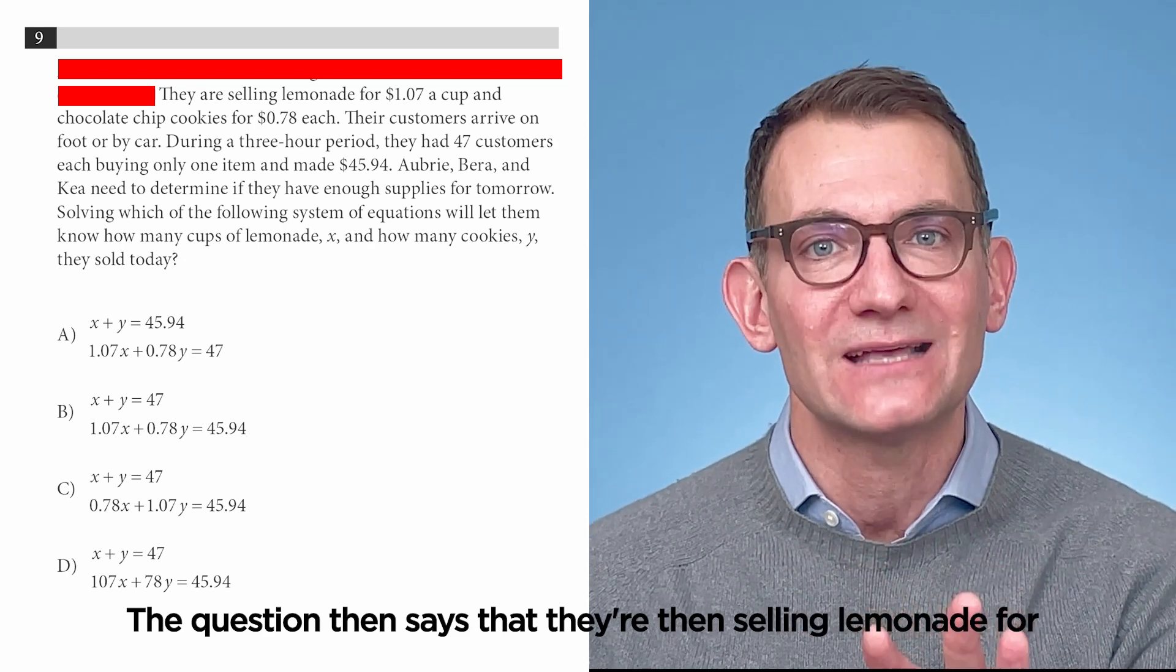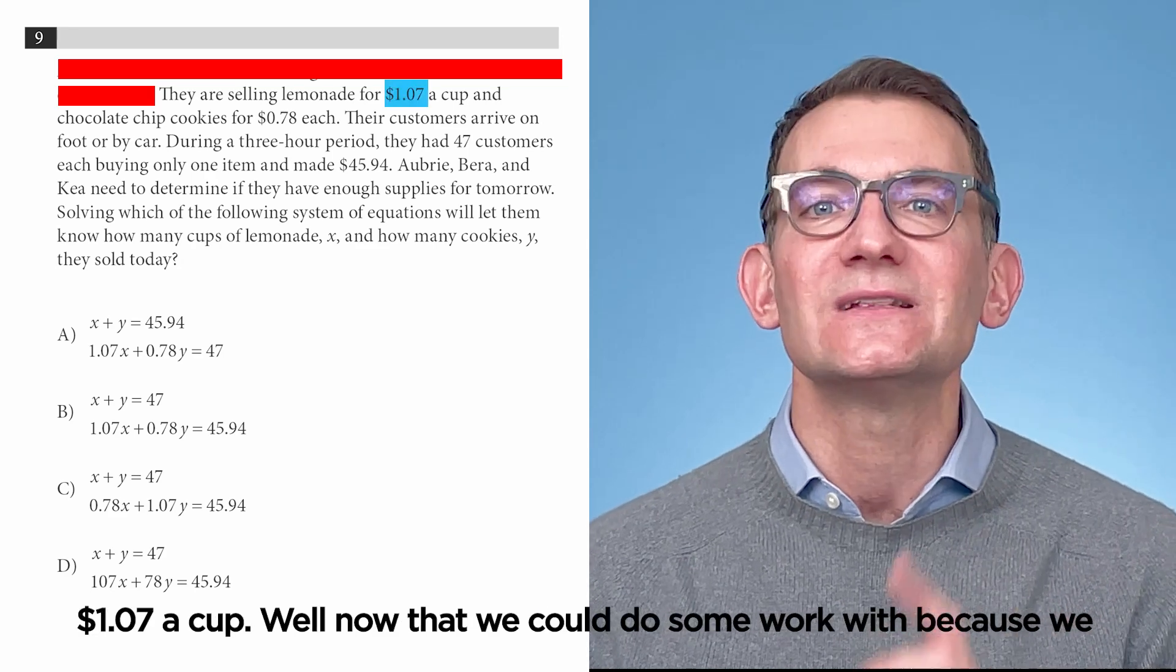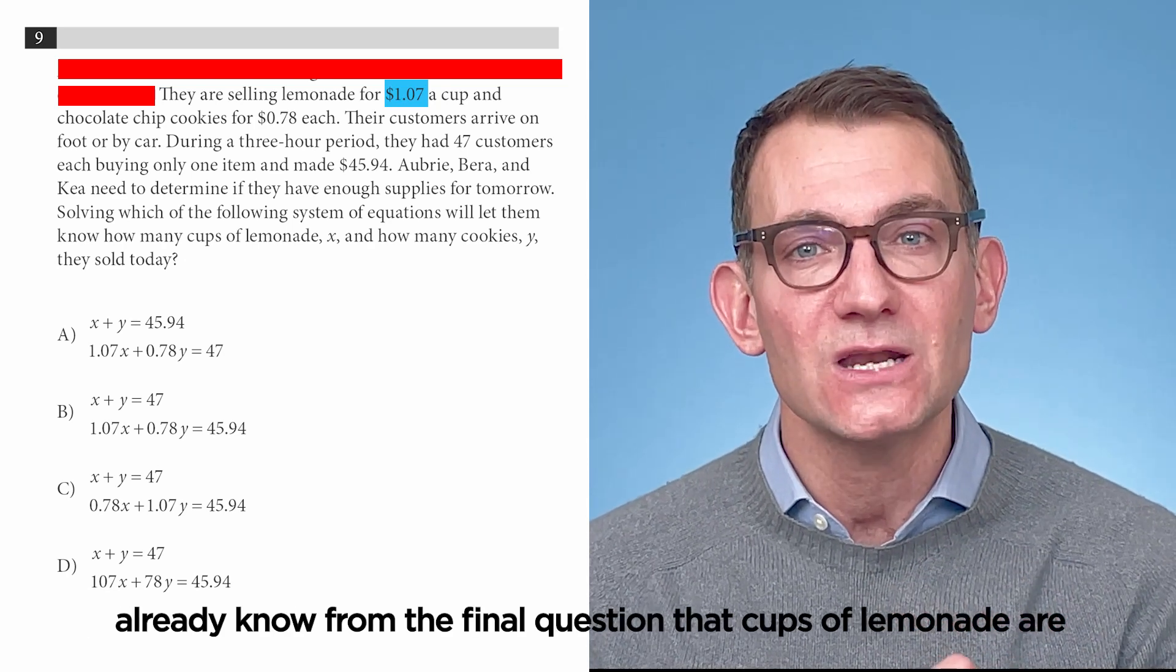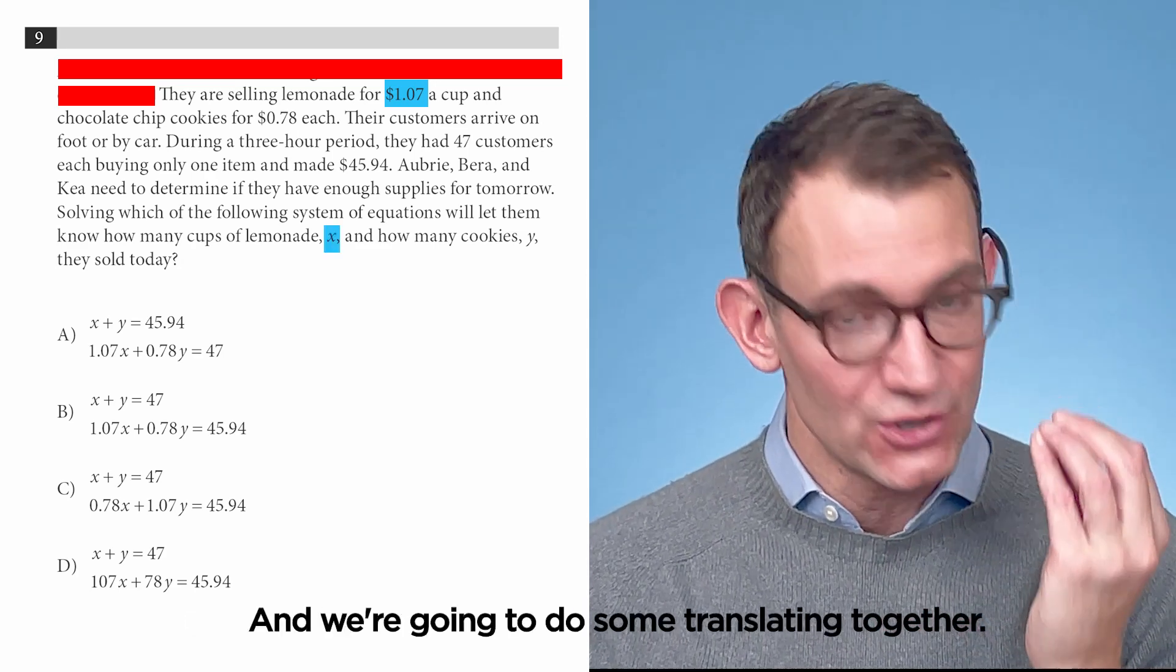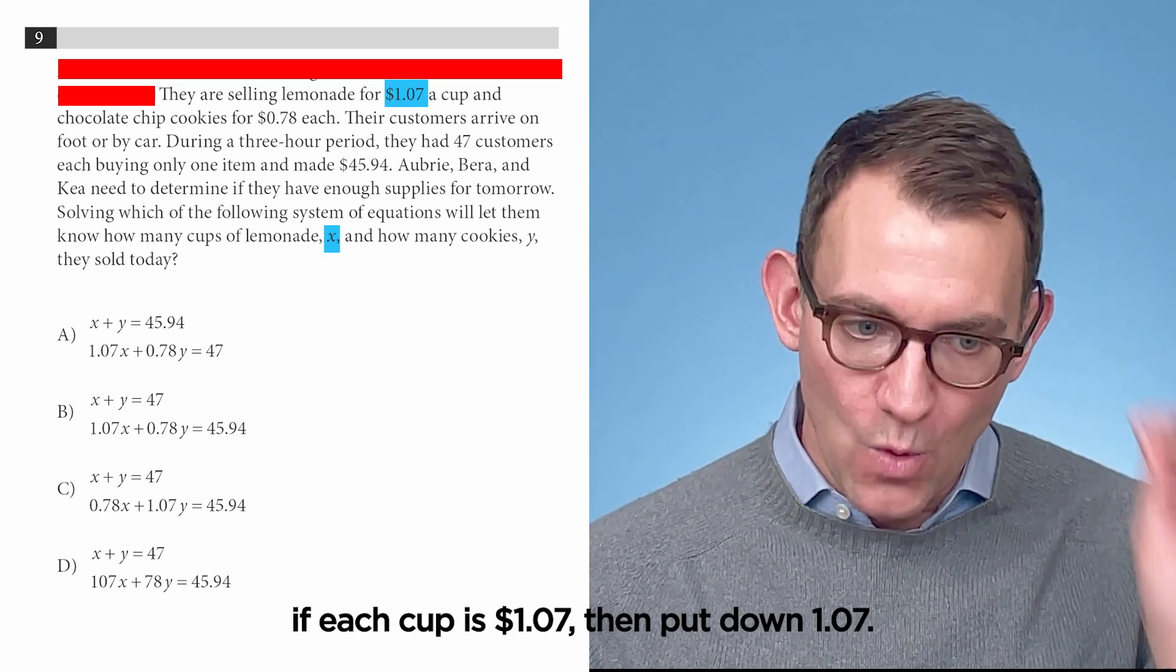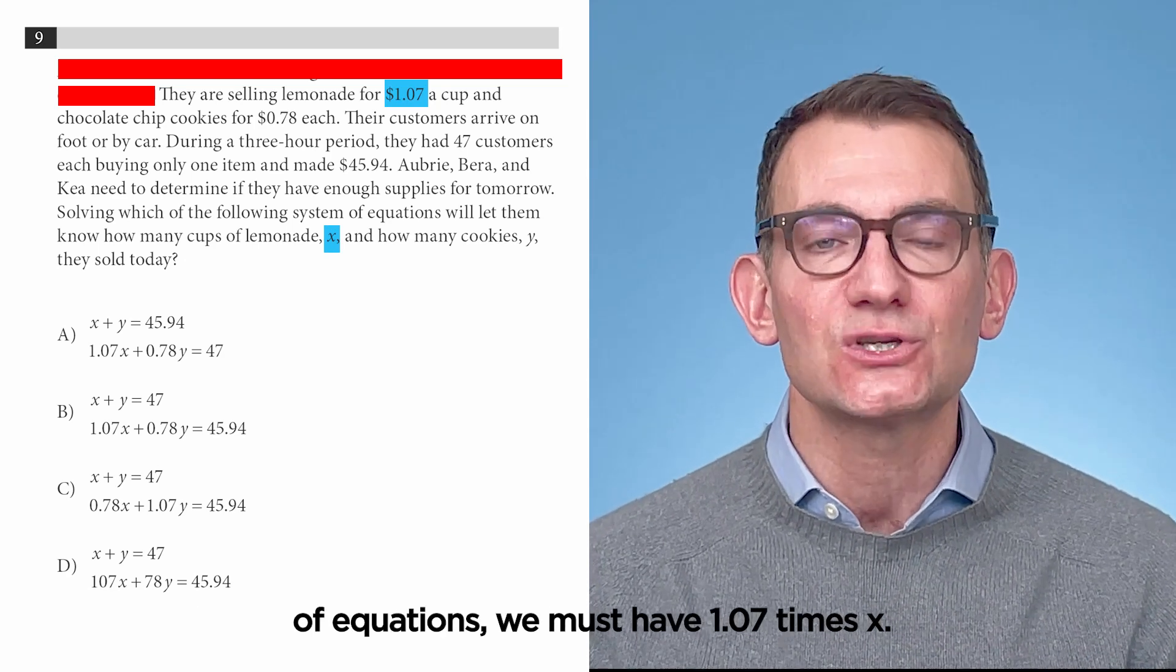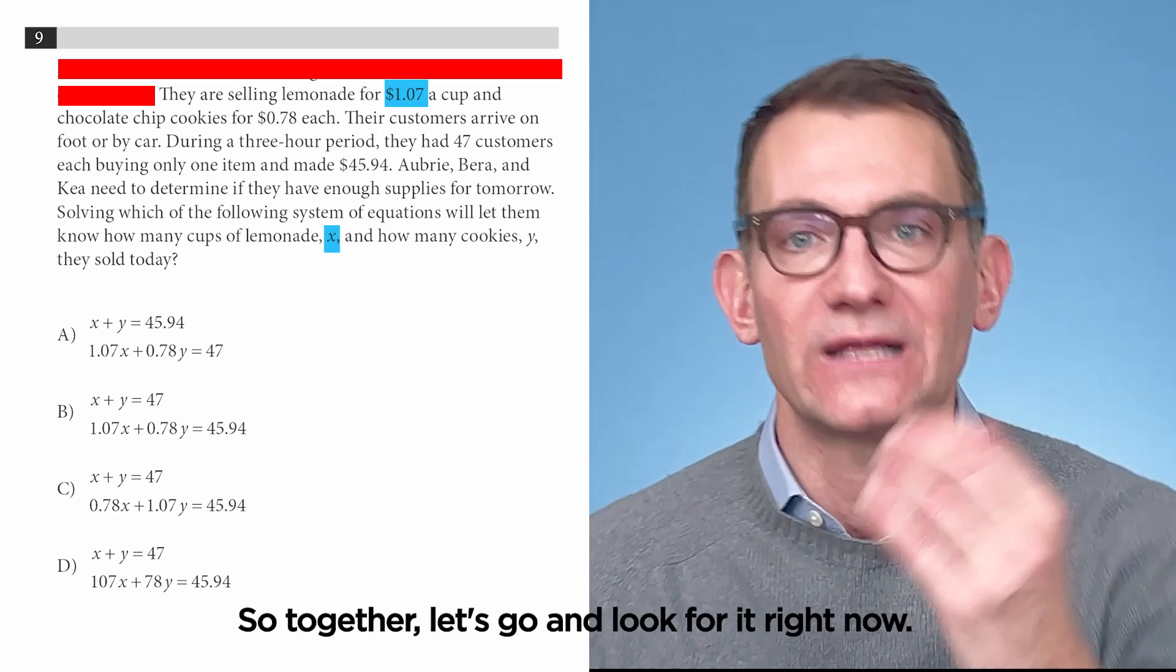The question then says that they're then selling lemonade for $1.07 a cup. Well, now that we could do some work with because we already know from the final question that cups of lemonade are represented by the variable x. So, let's put it all together, and we're going to do some translating together. If each cup is $1.07, then put down 1.07, and x is the number of cups. That means that somewhere in the system of equations, we must have 1.07 times x. So, together, let's go and look for it.